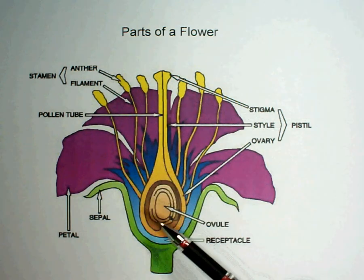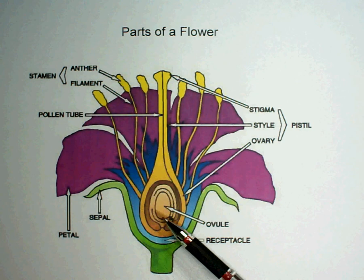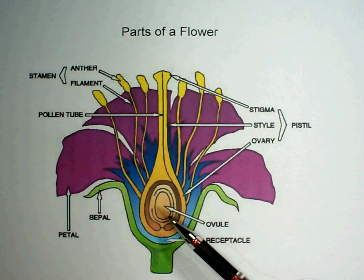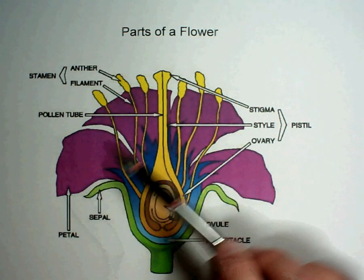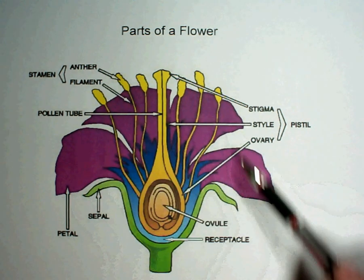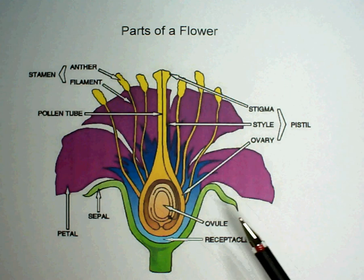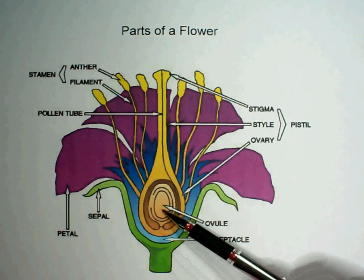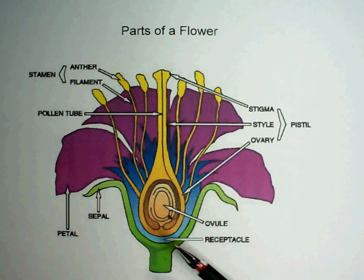The pollen goes all the way down and fertilizes the ovule. Remember, this is a blossom on an apple tree. Over time, if it has been fertilized, you'll eventually get an apple. All the petals — these purple things in the picture — fall off, and this here is the attachment to the tree. So the flower starts to die, but it has been fertilized in the middle, and eventually the fruit forms.